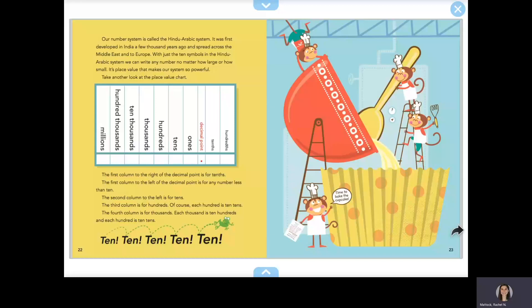Our number system is called the Hindu-Arabic system. It was first developed in India a few thousand years ago and spread across the Middle East and to Europe. With just the ten symbols in the Hindu-Arabic system, we can write any number no matter how large or how small. It's the place value that makes our system so important.